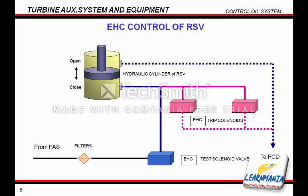This figure shows an outline of the control system for the RSV hydraulic cylinders. Note that a test solenoid valve is attached instead of a servo valve. The purpose of this valve is to test the RSV function during normal operation. While the solenoid valve is energized, the RSV will be closed and will fully open when the solenoid valve is de-energized.